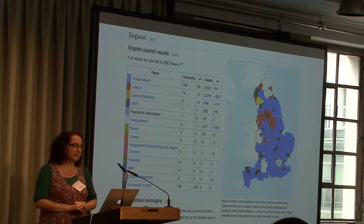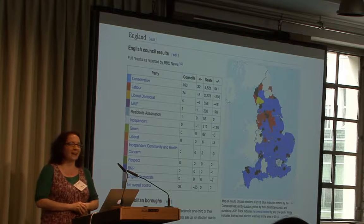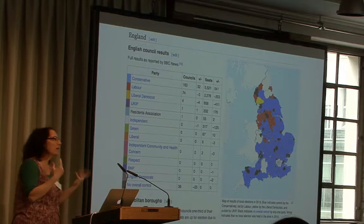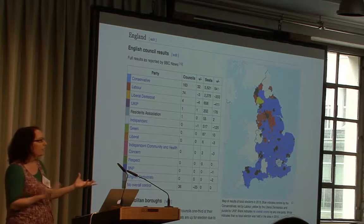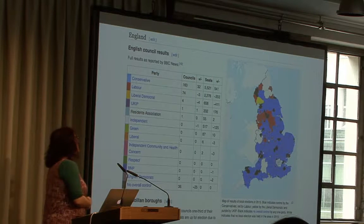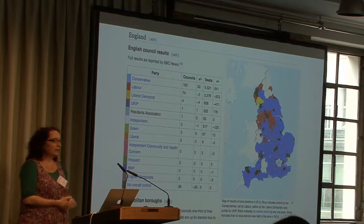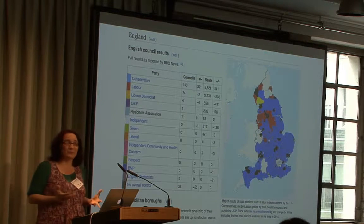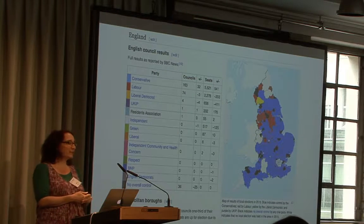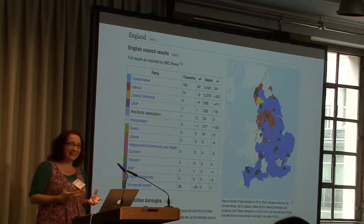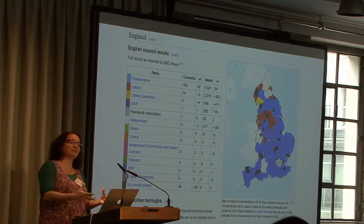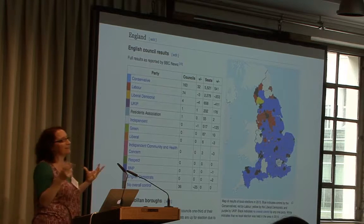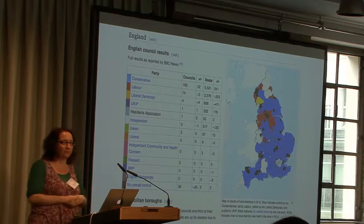Somebody has entered that data. If you ever want to get hold of that data and do something else with it, you need to parse that HTML, parse out that table. It's a real pain, because election results are often entered on Wikipedia really quickly, and it would be really cool to get hold of those results quickly, but they're all embedded in this horrible HTML.